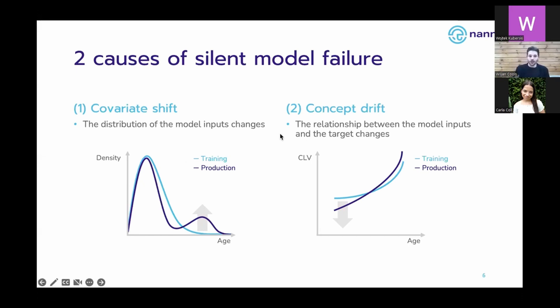That's the first cause: changes in the distributions of the model inputs over time, specifically in production compared to training or testing.